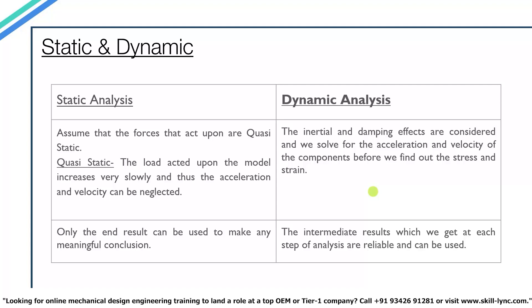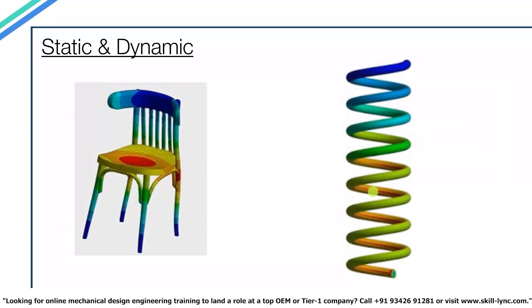In static analysis, when we start a simulation at point A we get an end result at B. Because of this, any data or analysis between points A and B cannot be relied upon — only the end result can be used to make a meaningful conclusion. In dynamic analysis, however, the intermediate results obtained at each step are reliable and can be used. In short, static analysis can only be performed when the system does not depend on time and the loads applied are constant.